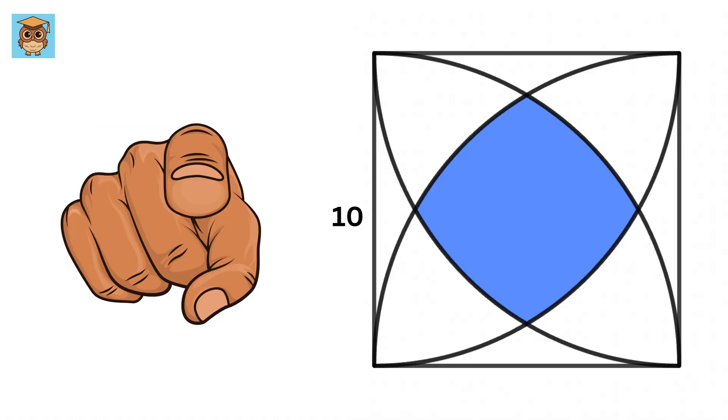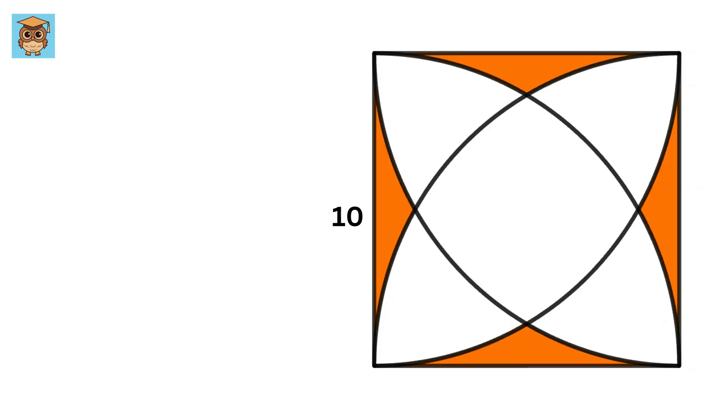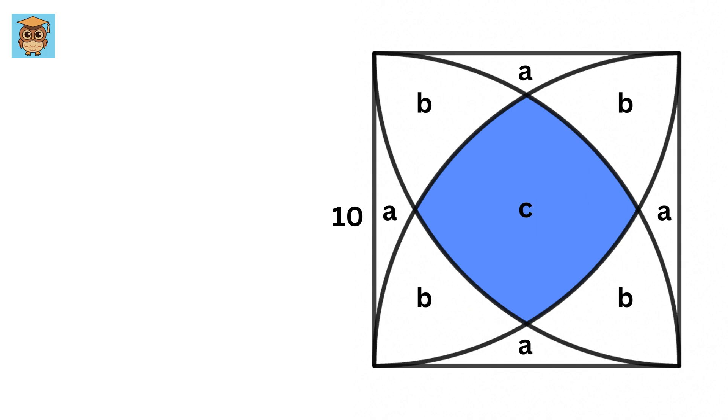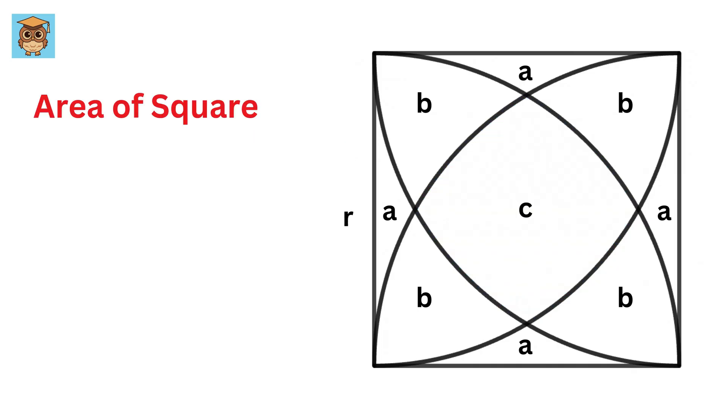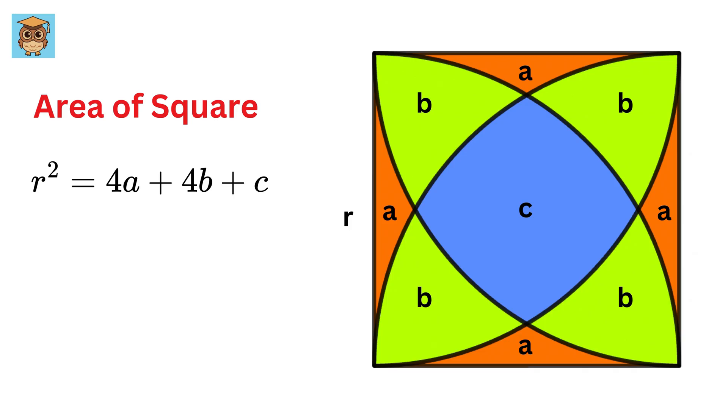Can you solve it? Using symmetry, let us label all of these areas as A, these as B, and this one as C. Also, just to generalize this question, let us label the side length of this square as R. So it is crystal clear that the area of this square, or R-square, equals 4 times A plus 4 times B plus C.